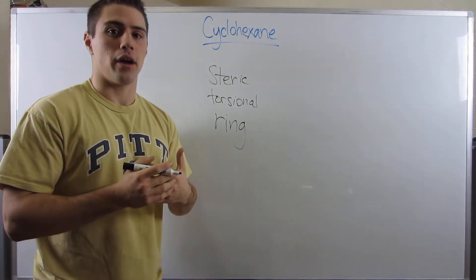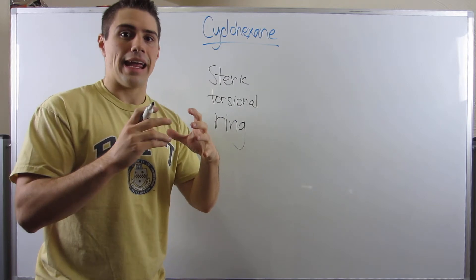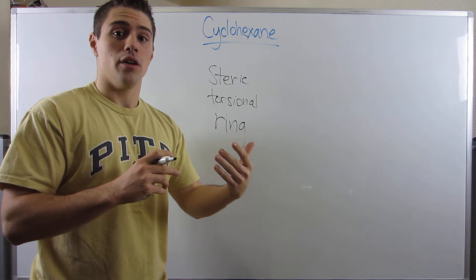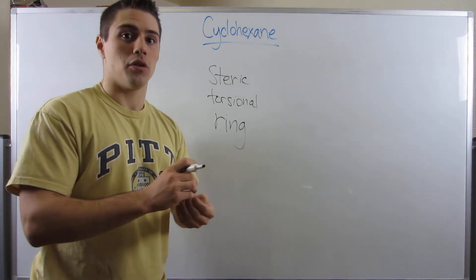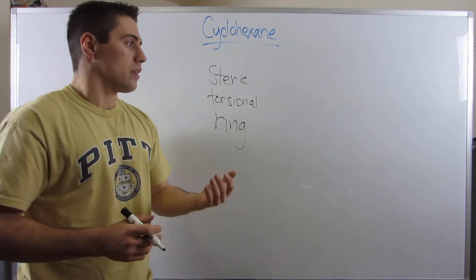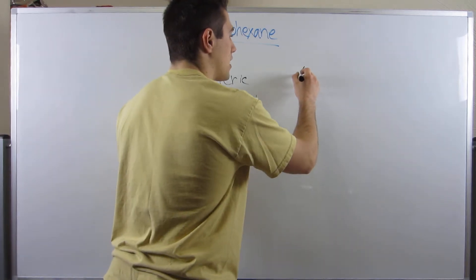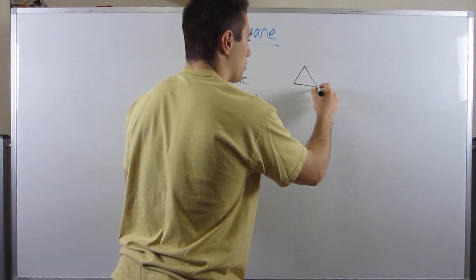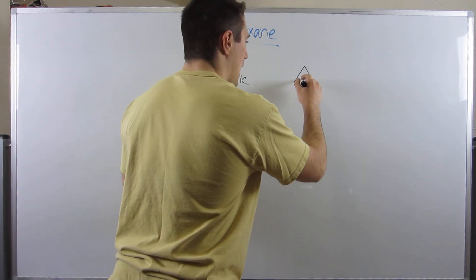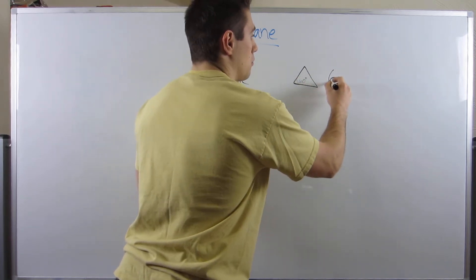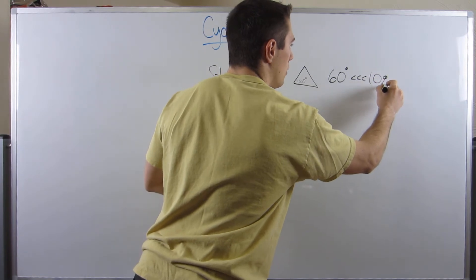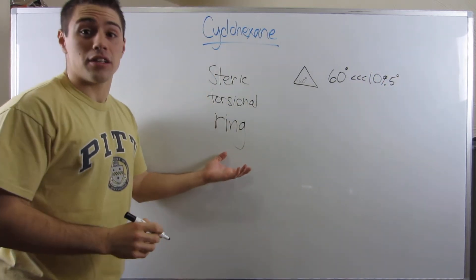Ring strain is the type of strain where you have a cyclical structure and the actual geometry of the ring prevents the bonds in the ring from obtaining the angles they want. For example, in methane the bonds are 109.5 degrees. In cyclopropane — a three-membered ring — we're looking at an equilateral triangle, so we have 60-degree bond angles. We don't need to be math majors to see that 60 degrees is much less than 109.5 degrees, so there's some strain associated with that.